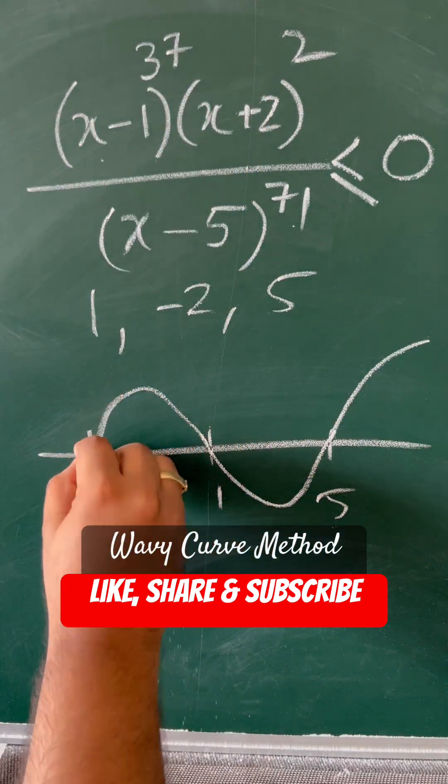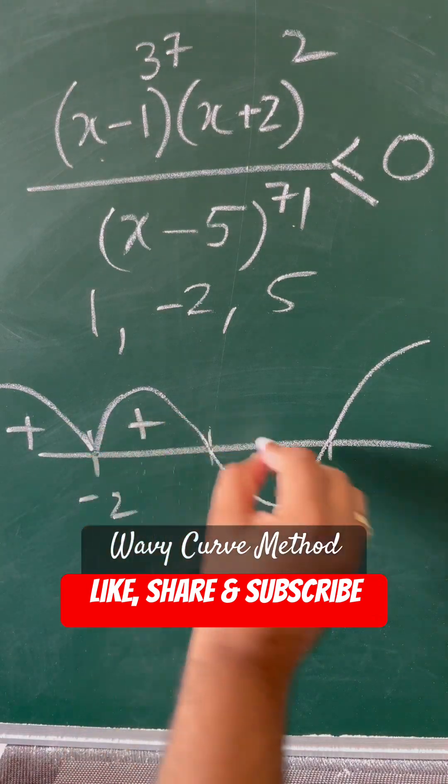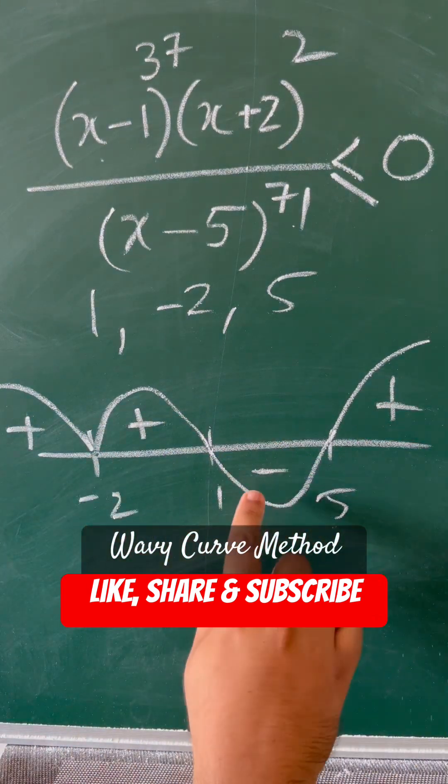At -2 you have even power, so you remain on the same side. The upper part is denoted by plus and the lower part is denoted by minus. Now you have to find less than or equal to 0.